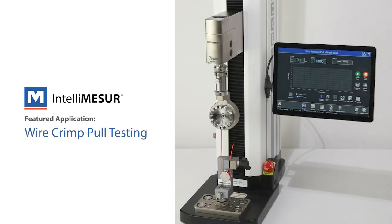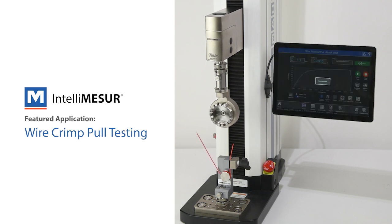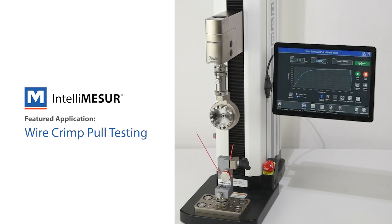Series F test frames with IntelliMeasure provide a configurable platform for virtually any wire crimp pull testing application up to 1,500 pounds or 6.7 kilonewtons of force.